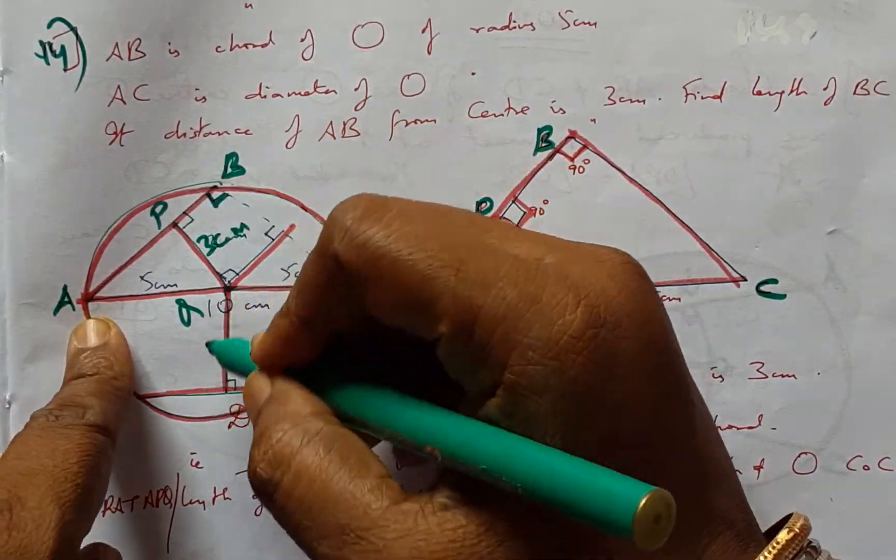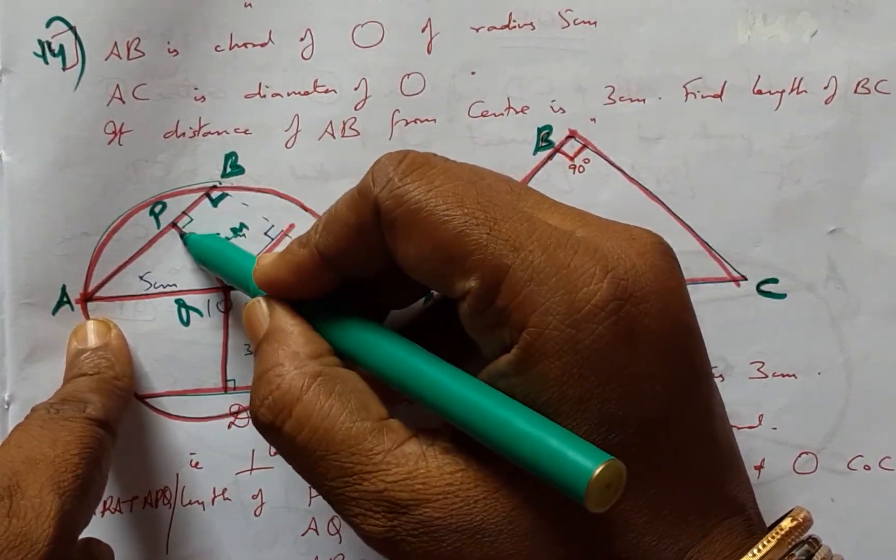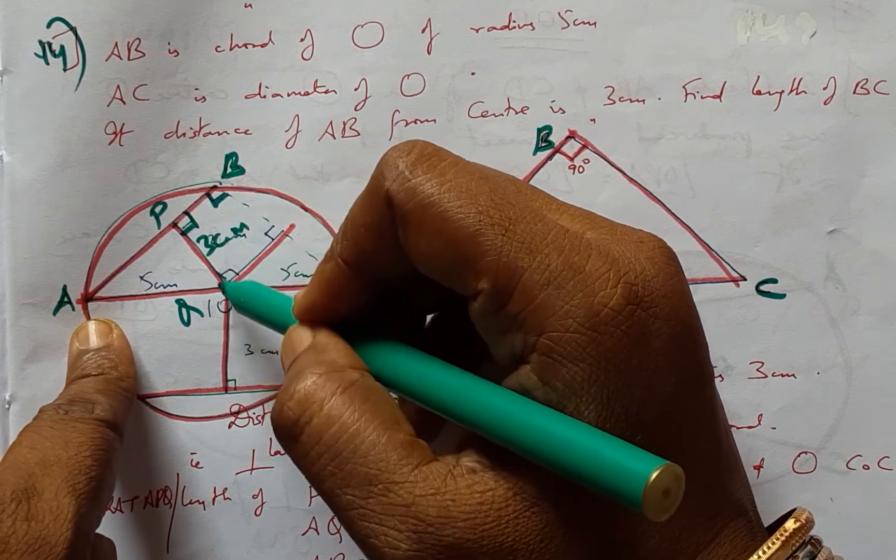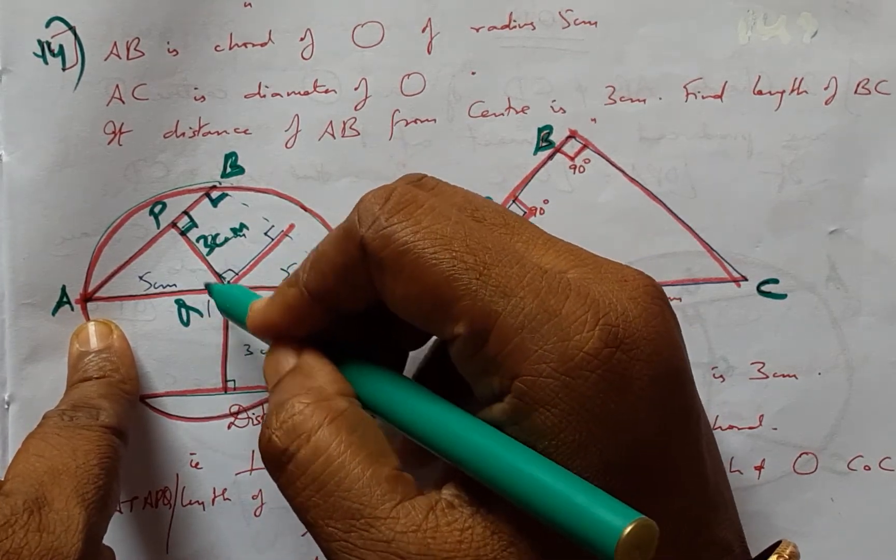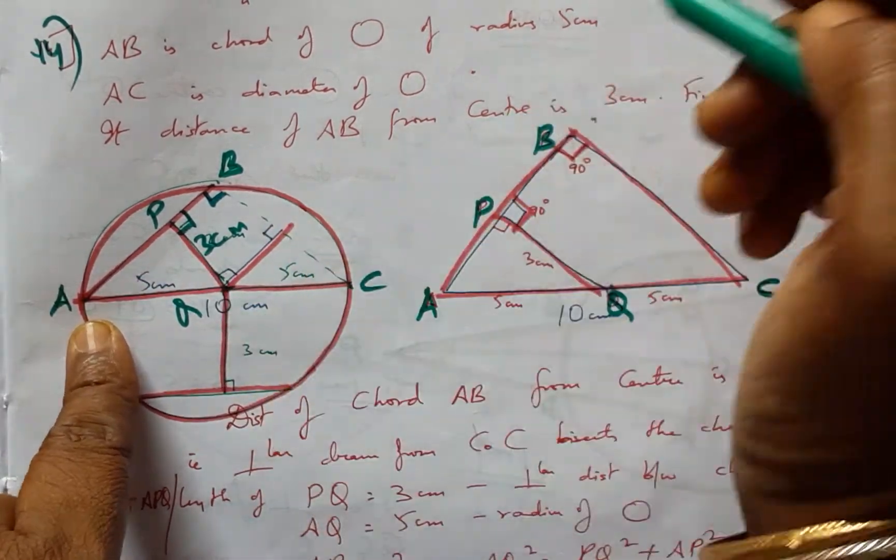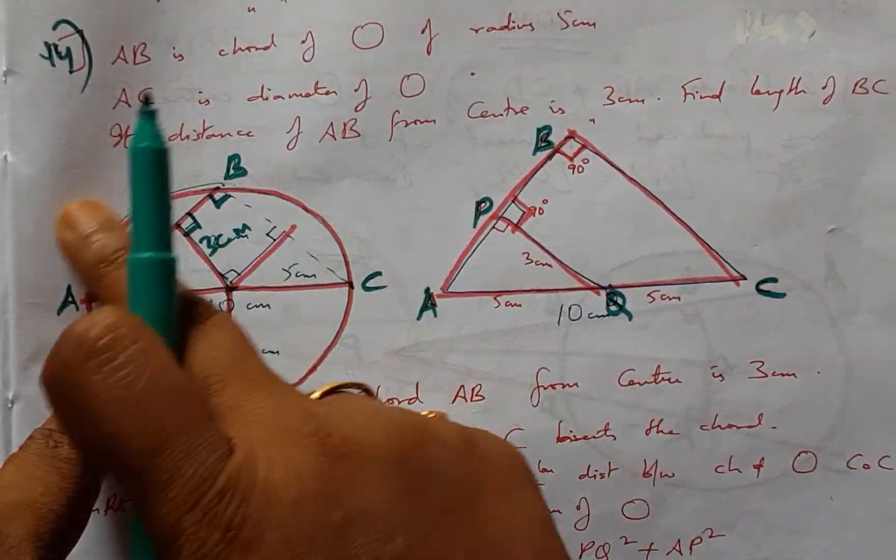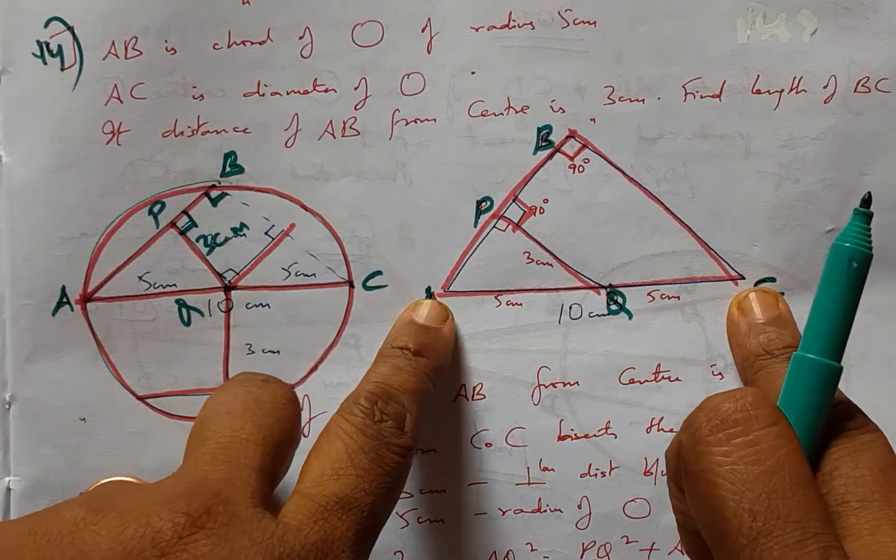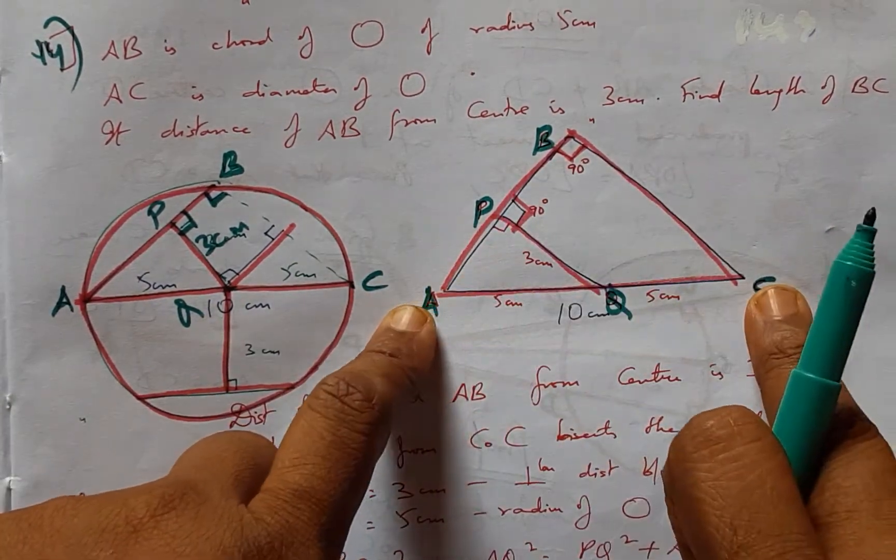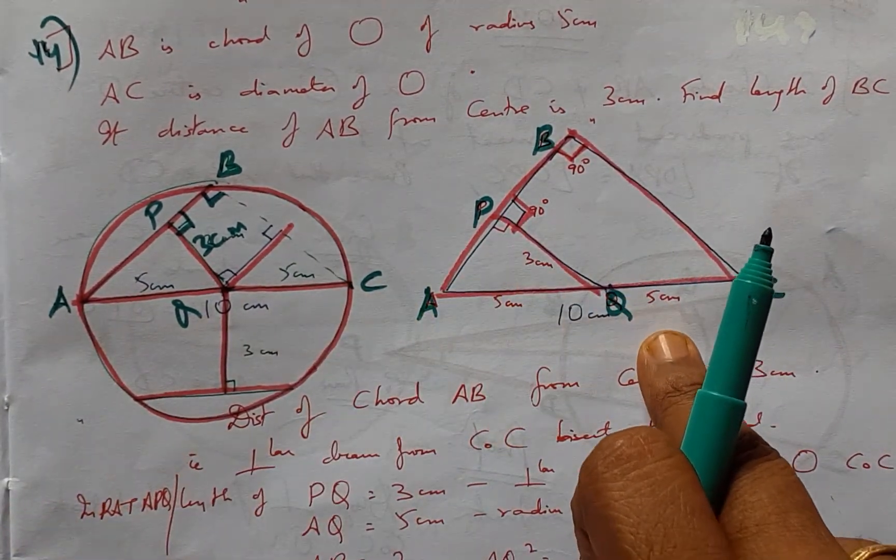So this is perpendicular. And OP is also perpendicular because this is the shortest distance from the center. Now we bring out this entire triangle from the semicircle to form a triangle and see what happens.